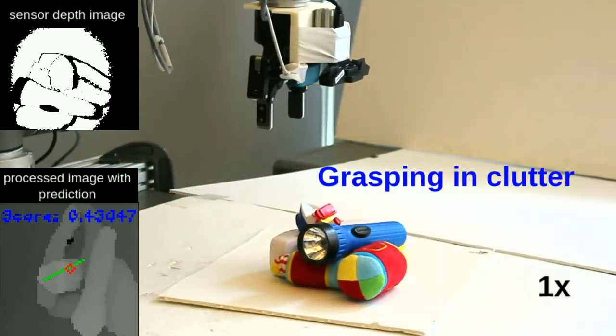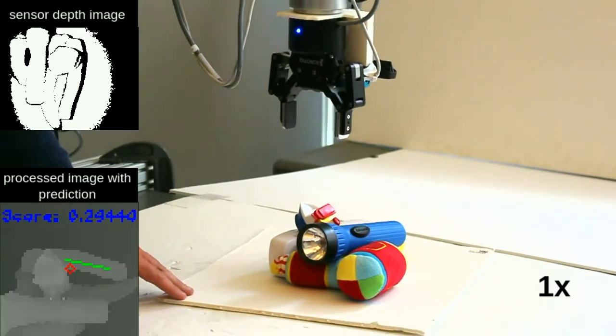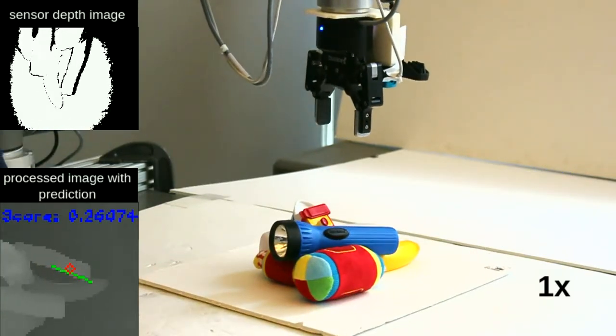After centering the grasp and moving to the minimum range of the depth sensor, the robot holds the controller, moves 12 cm forward, and closes the fingers.